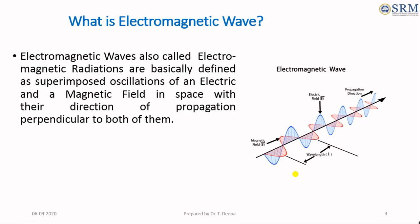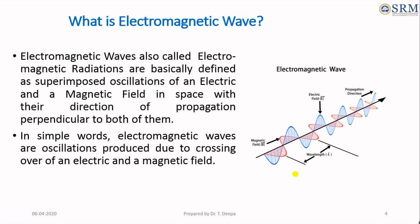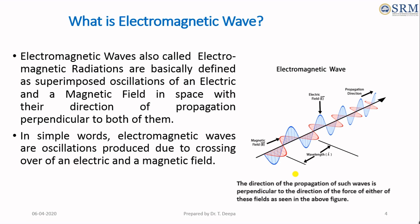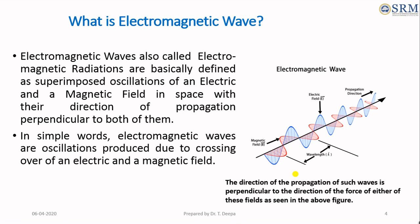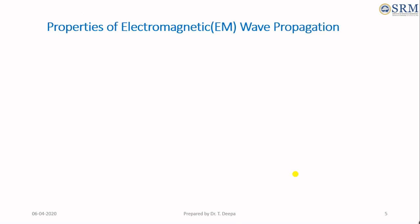What is an electromagnetic wave? Electromagnetic wave is also called electromagnetic radiation. It is an oscillation produced due to the crossing over of an electric and magnetic field. The direction of propagation of such a wave is perpendicular to the direction of the force of either of these fields, as shown in the figure. Like all wave forms, these have some properties as well.